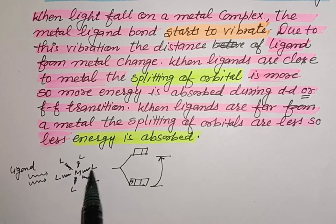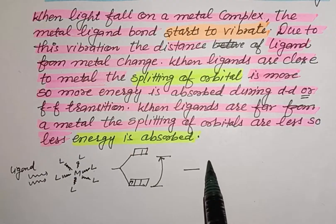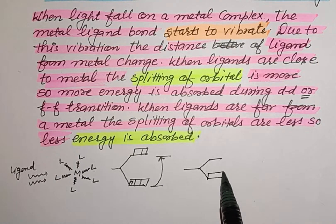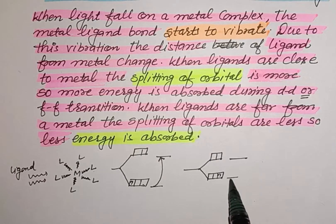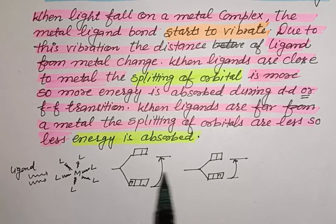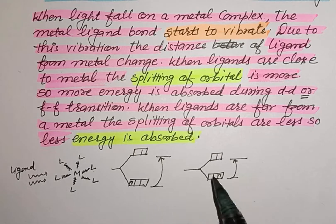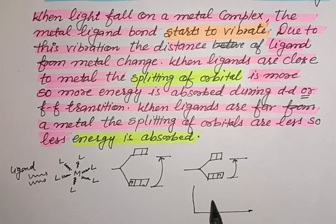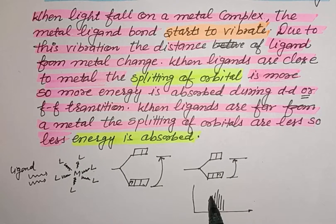When the ligand moves farther away from the metal after vibration, the distance between the split orbitals is less, so less energy is absorbed by the electron during its transition. As the bond vibrates or fluctuates, a large number of energy differences are formed, meaning a large range of energies is absorbed. As a result, the spectrum formed is broad.